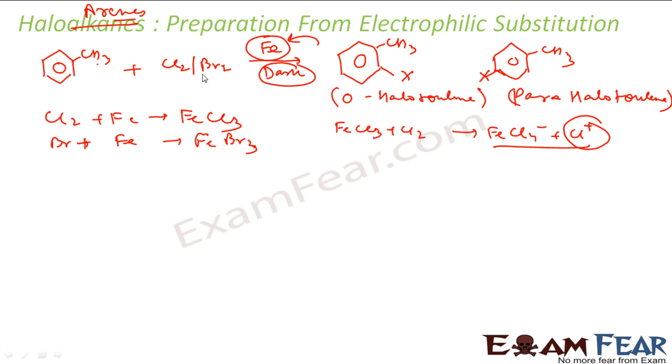Why in the absence of light? Because in the presence of light this chlorine will form chlorine free radical. So we want this experiment in absence of light. Why iron? Because iron will help in formation of electrophile.